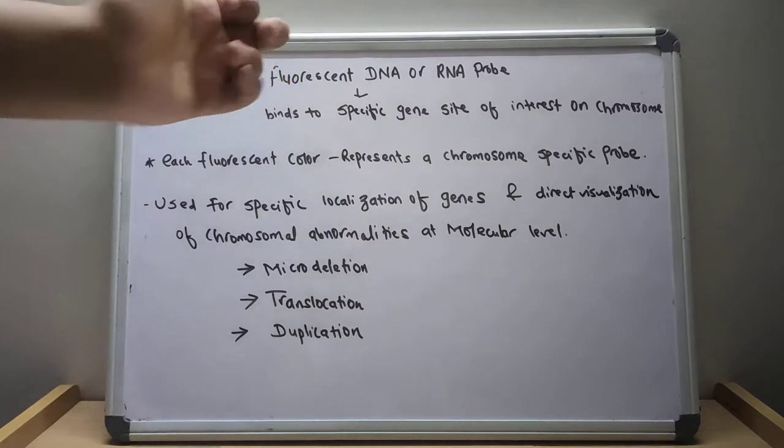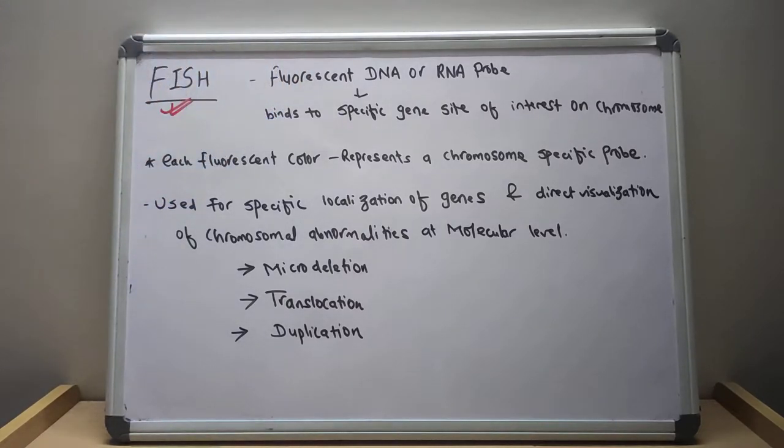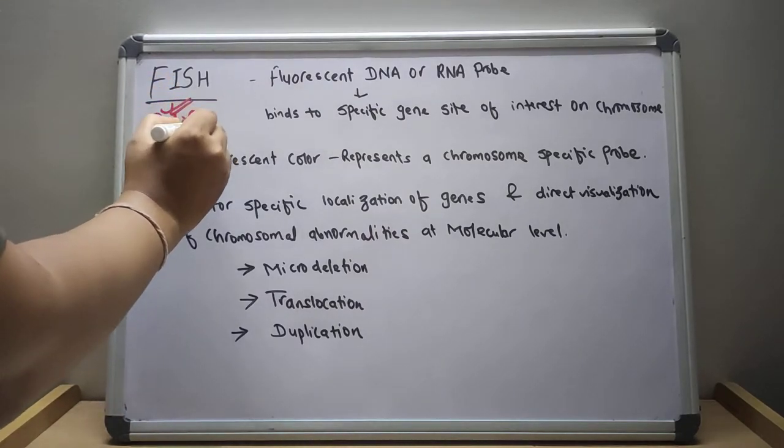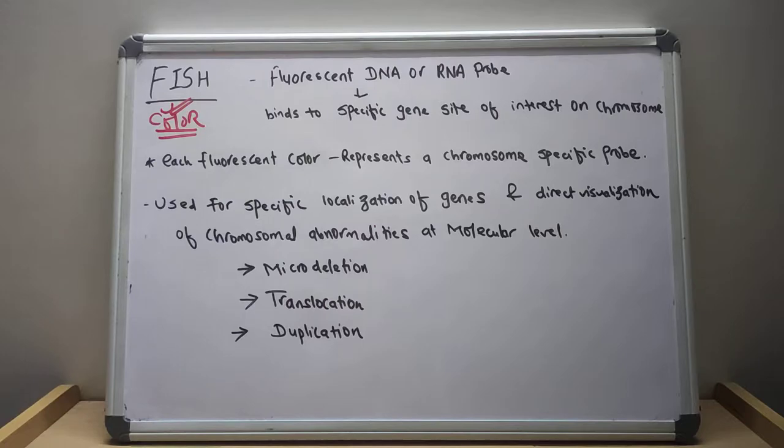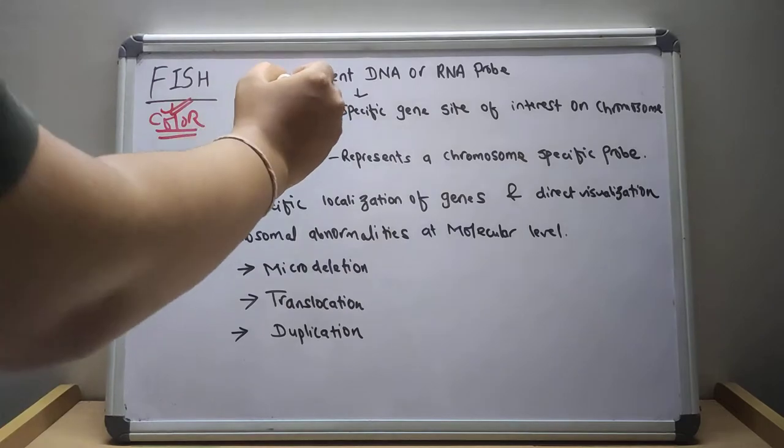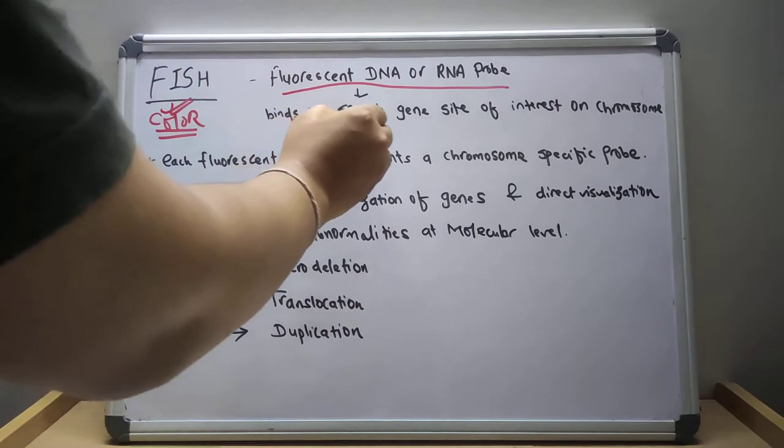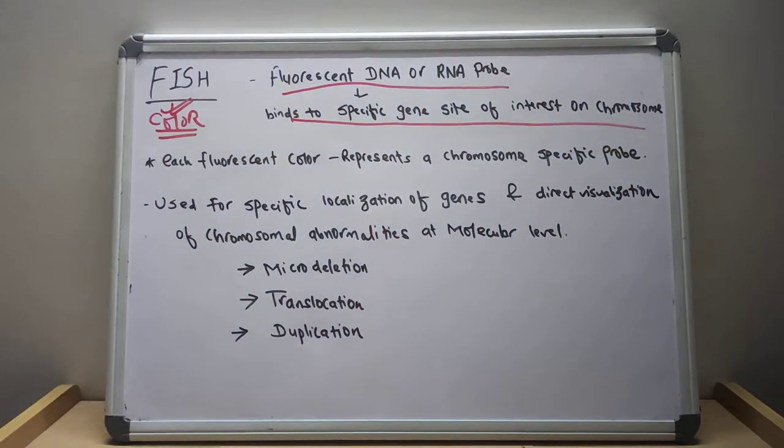The fluorescence name itself suggests that color is imparted in this technique. In this technique, the fluorescence DNA or RNA probe binds to specific gene sites of interest on chromosomes, and the fluorescent color represents a chromosome-specific probe.